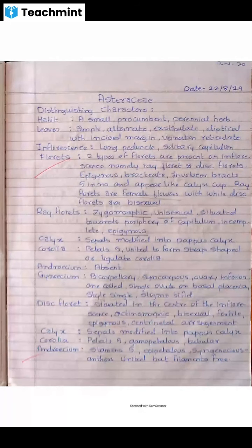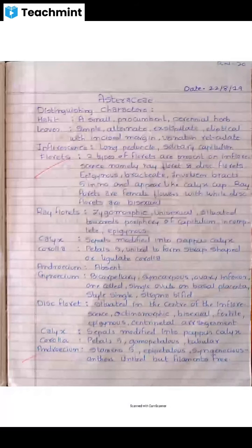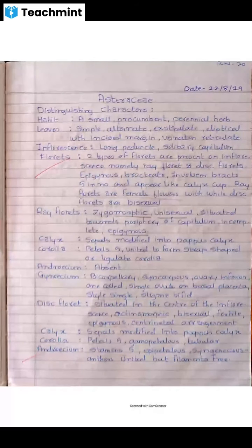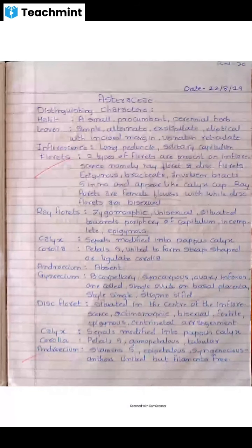Gynoecium: bicarpellary, syncarpous, ovary inferior. Syncarpous means having carpels united — examples include tomato, mustard, coconut, and mango. One cell, single ovule on basal placentation. Style single, stigma bifid.